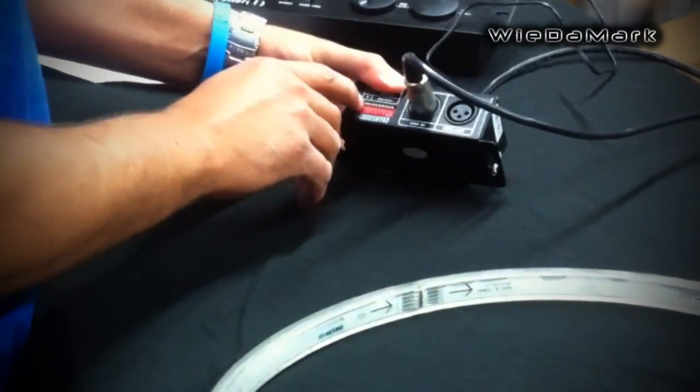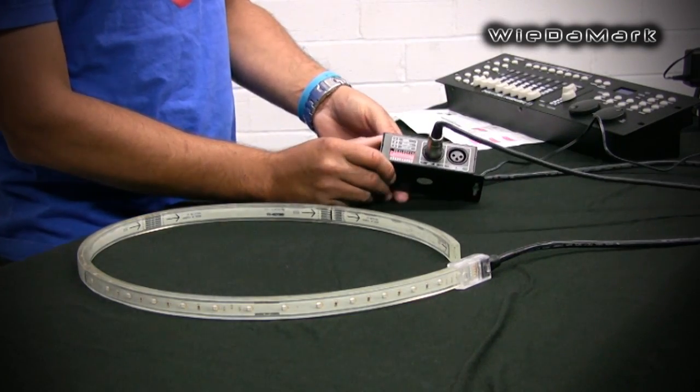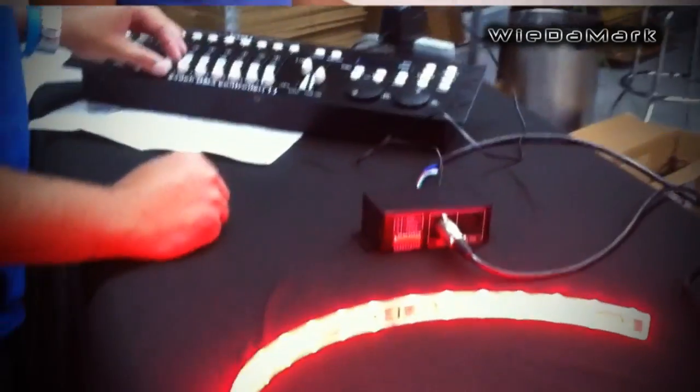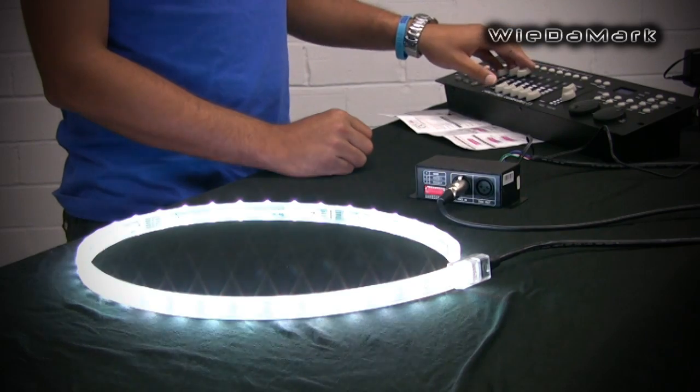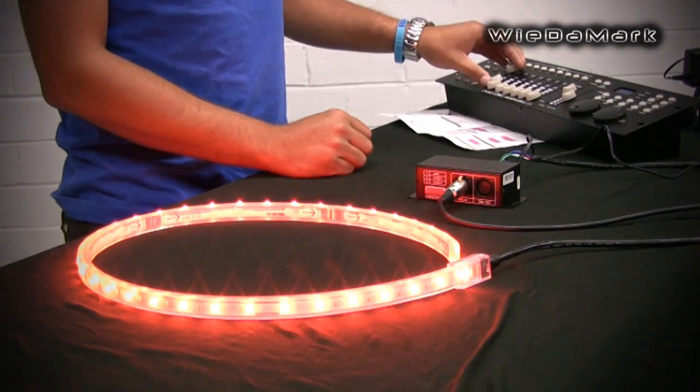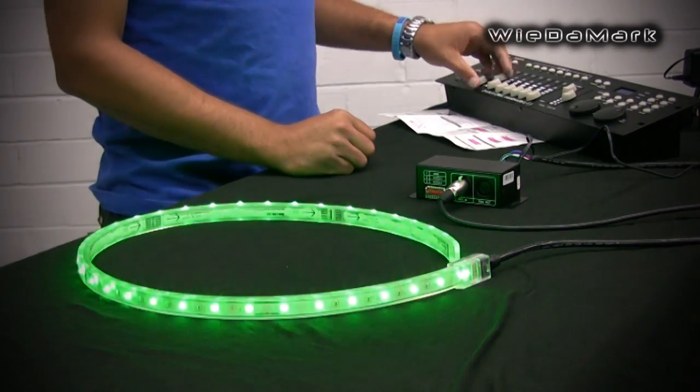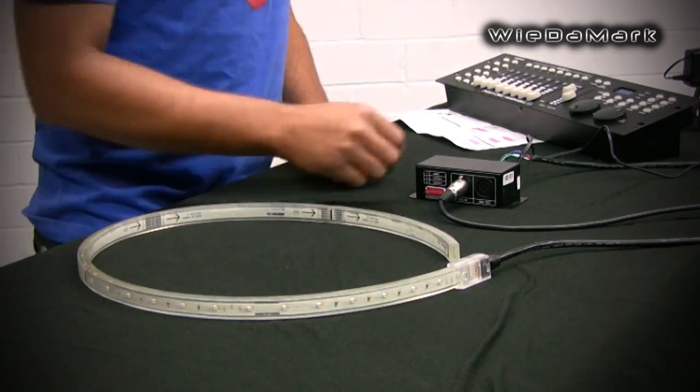So we're going to set it to channel one, which is just dip switch one on position, and then you can adjust your sliders for the effect that you want. And then use the DMX controller to make your scenes and what you're trying to do with the RGB flex.